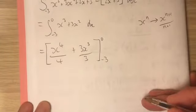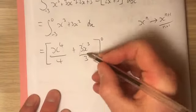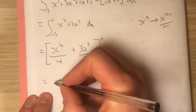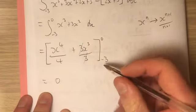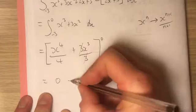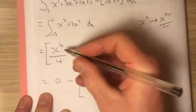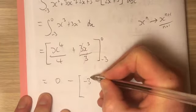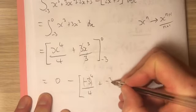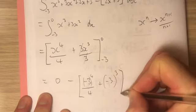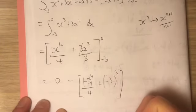So what happens now? That cancels out. Putting in the number 0, I get 0. Putting in the number negative 3, so take away. What happens when I put in negative 3? I've got negative 3 to the power of 4 over 4 plus negative 3 cubed. So this is looking manageable.